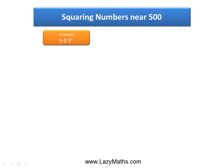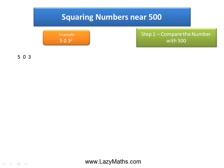Here's an example of squaring numbers near 500. 503 squared. The first step is to compare this number 503 with 500. As we can see, 503 is 3 more than 500. We call plus 3 as the difference.